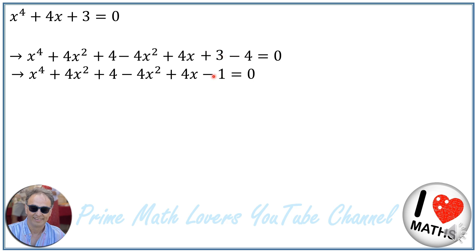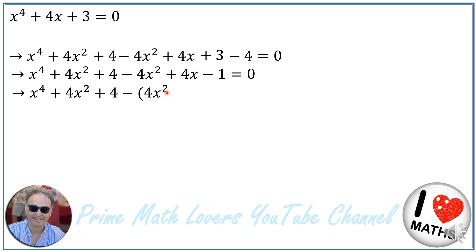Now I factor out the minus from the last three terms, so I will have x to the power of 4 plus 4x squared plus 4 minus 4x squared minus 4x plus 1 is equal to 0.